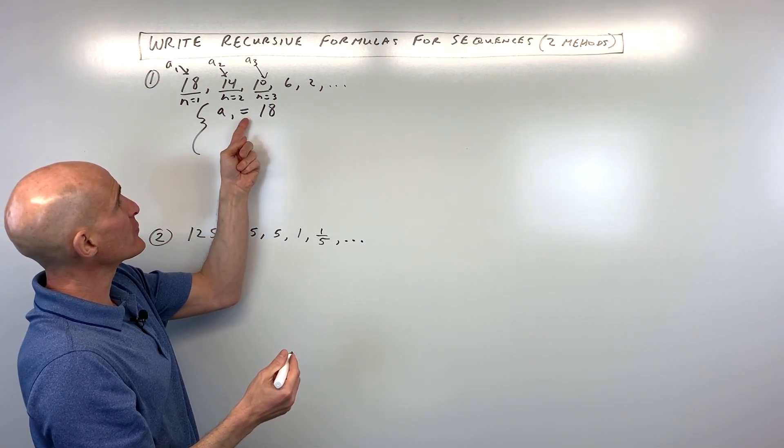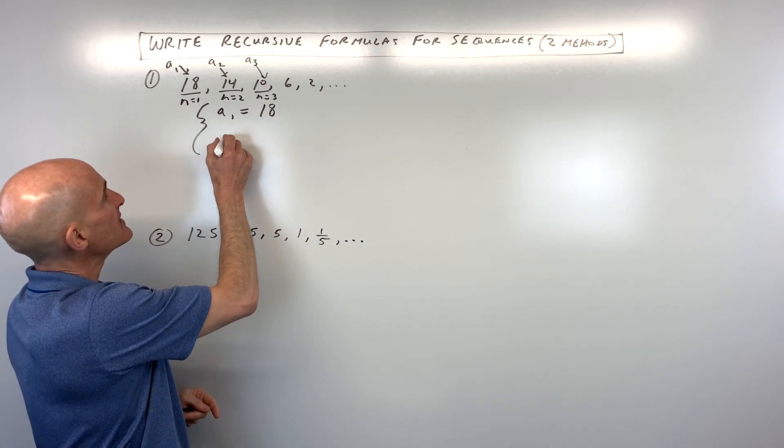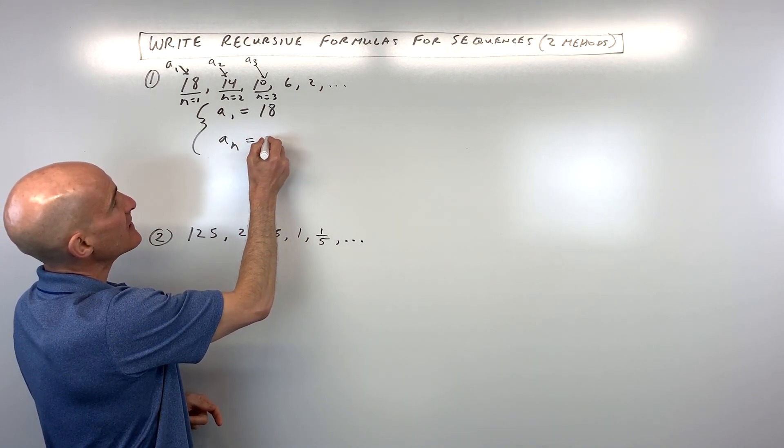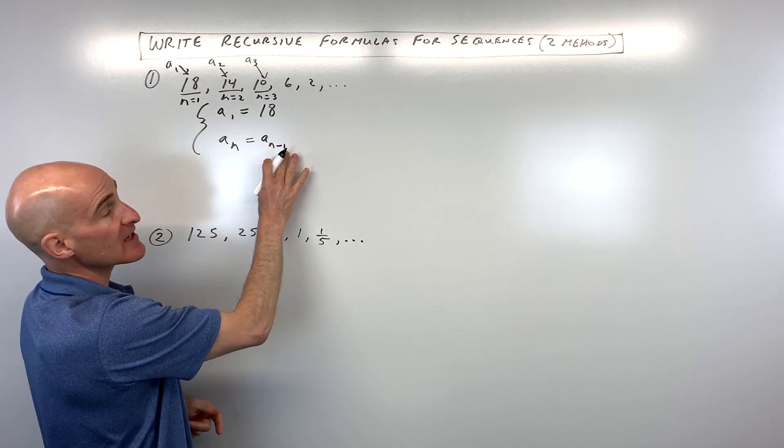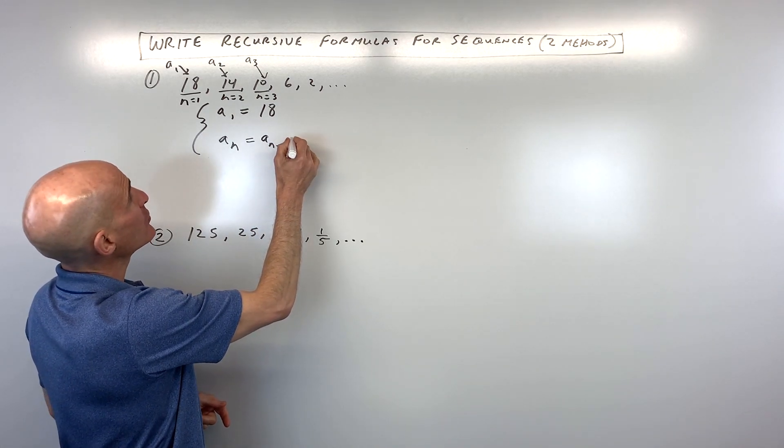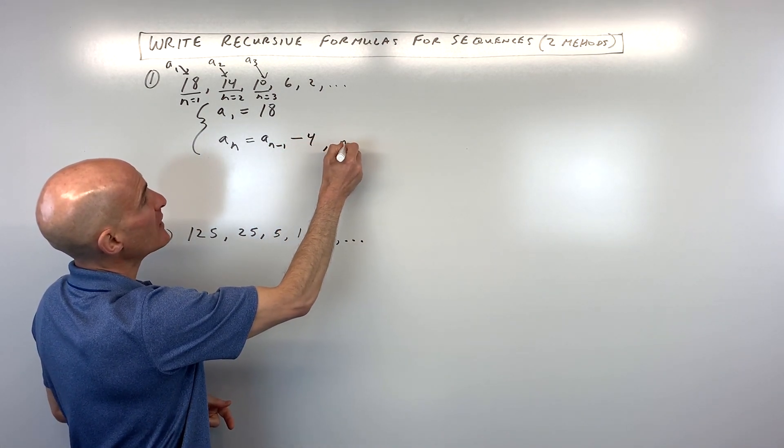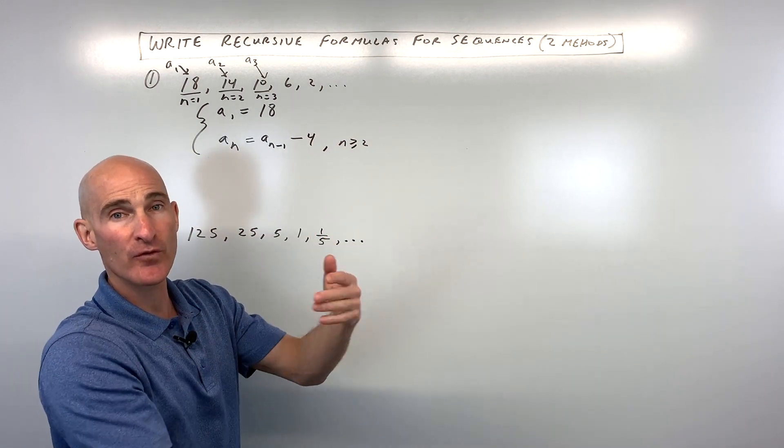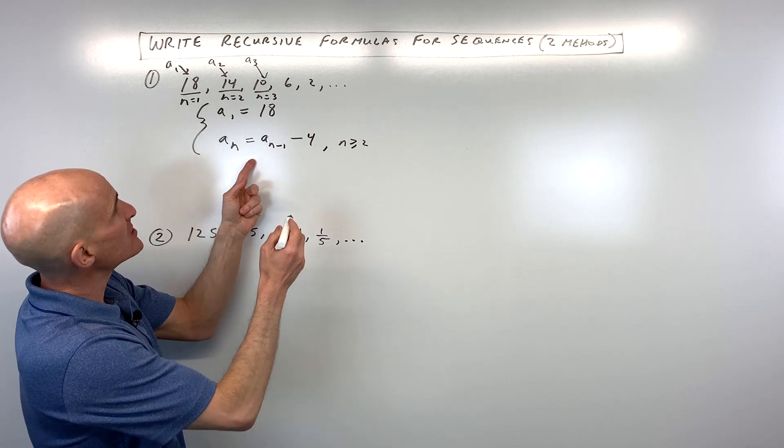So now we've got the value of our first term is 18. But to get to the nth term, the value of the nth term, what we're going to do is we're going to take the previous term, see n minus 1, and we're going to subtract 4. And this is when n is greater than or equal to 2, meaning for the second term, third term, fourth term, and so on.